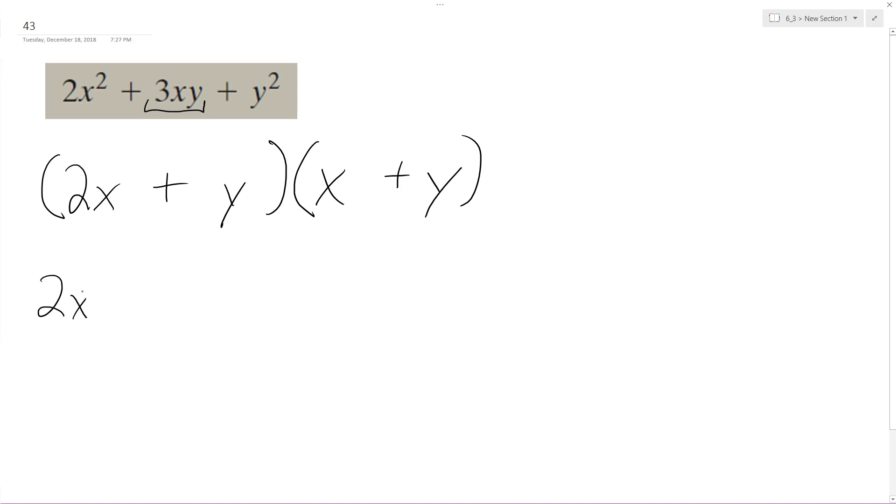So it's going to be 2x squared plus 2x times y, so 2xy, plus y and x, so plus xy, and then plus y squared. So this matches our trinomial, our original trinomial of 2x squared plus 3xy plus y squared.